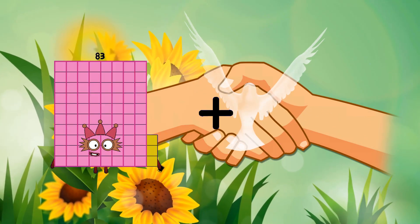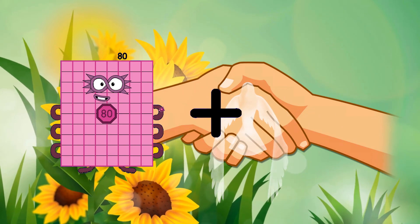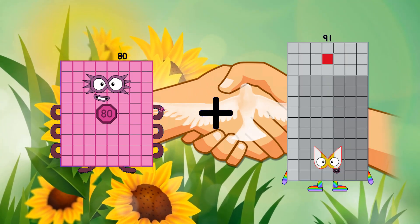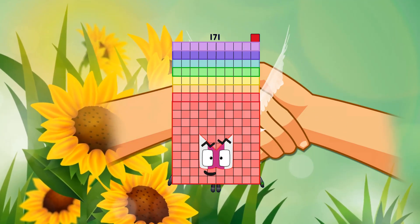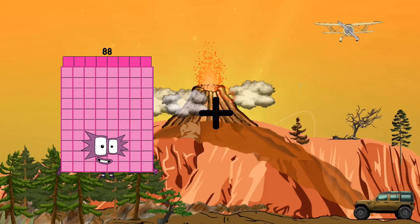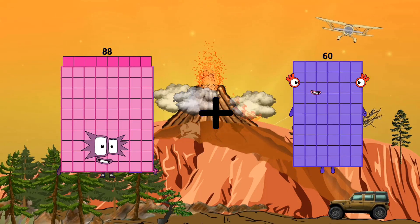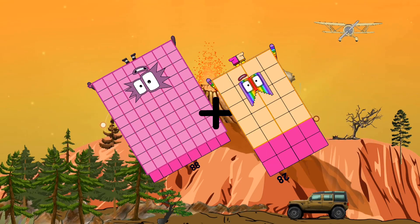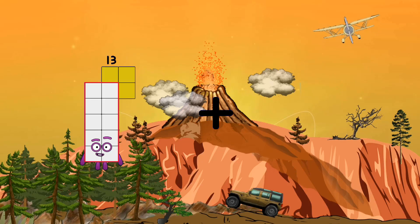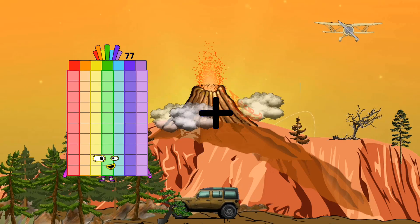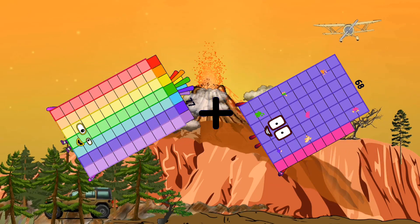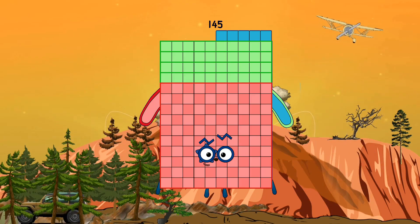80 plus 91 equals 171. 88 plus 28 equals 116. 77 plus 68 equals 145.